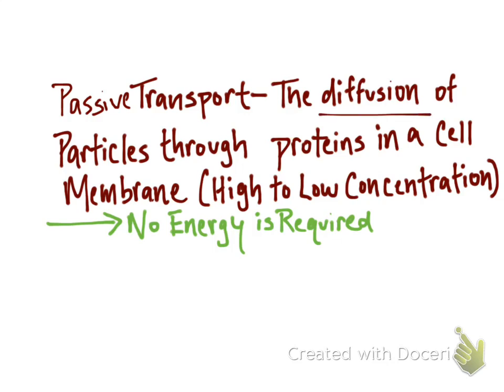So whenever you see diffusion mentioned, you're going to know it's high to low concentration and no energy is required. And so from this definition, you should have realized that diffusion is a type of passive transport. But passive transport is not necessarily done for equilibrium. It's just done to move particles in and outside of the cell.